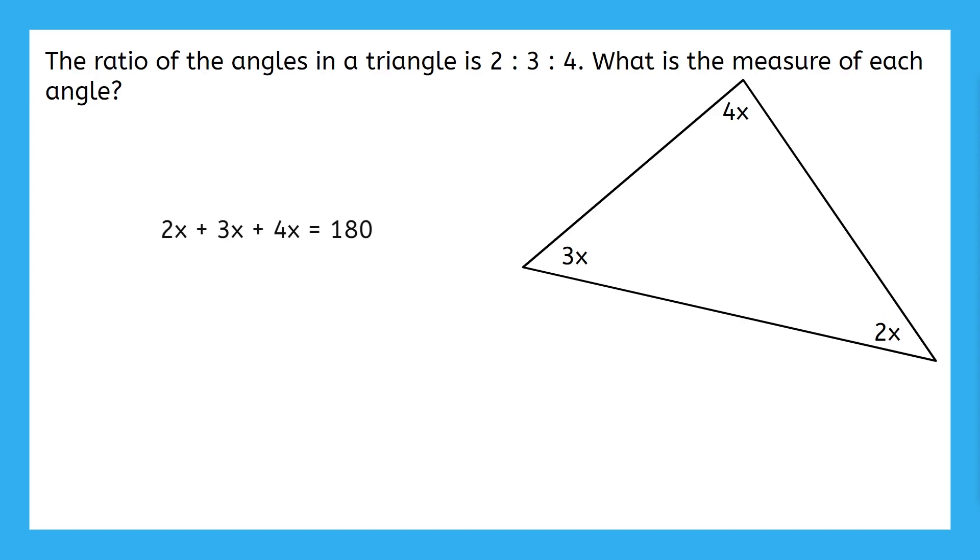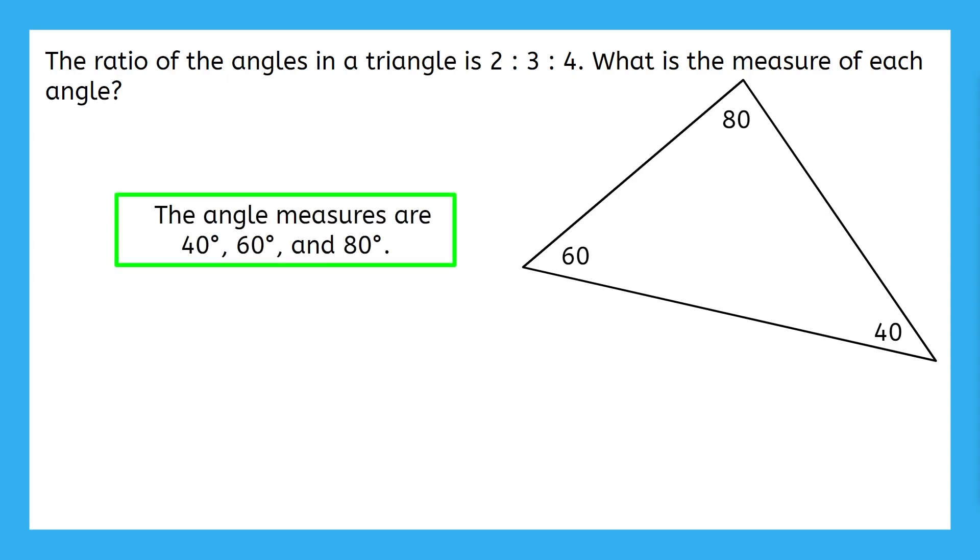All three angle measures will add up to 180 degrees. Then we can combine like terms and divide by 9 to get our final x value. Now we can substitute this x value back into each expression to get our angle measures. This gives us 40, 60, and 80 degrees as our angle measures. Do these add up to 180 like they're supposed to? Yes, they do. Great. Let's write this as our final answer.